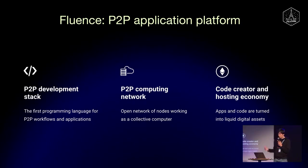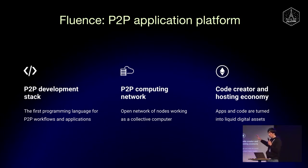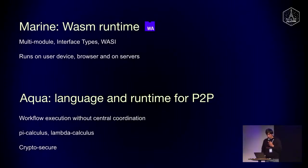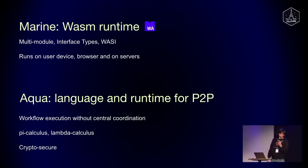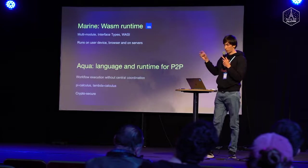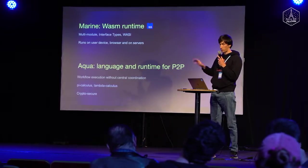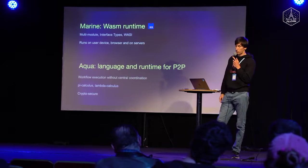Fluence is three things: the development stack for applications, the network that runs this development stack, and the economics around it. The development stack consists of two important things. First, Marine — a WebAssembly runtime that allows running functions on any device the same way. You can link a few modules together, access file systems, and it supports all WebAssembly standards.